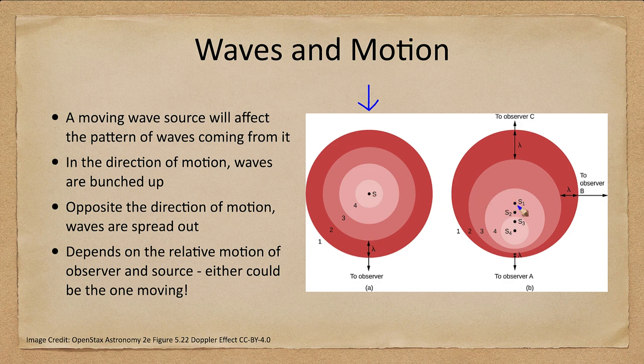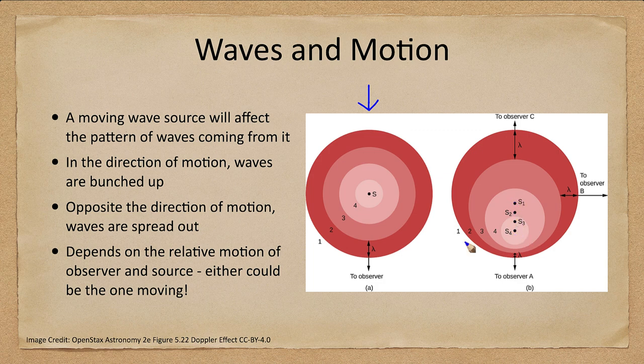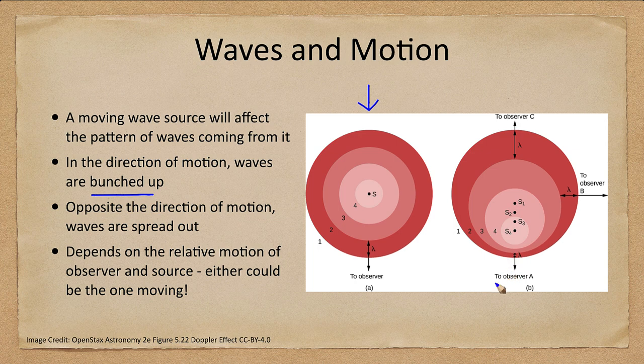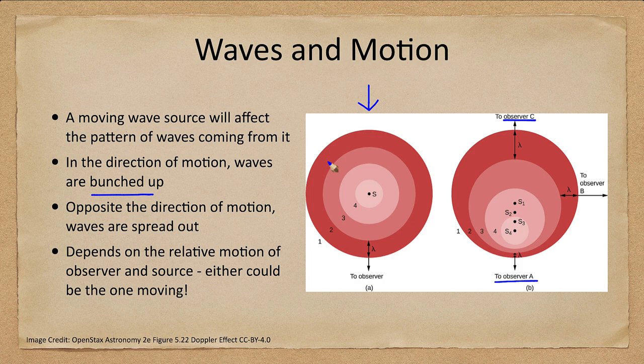However it's different if the observer is moving. They move from position one to two to three to four here, and that means that the waves will bunch up in the direction of motion. So an observer at position A will see the waves all bunched up. An observer at position C will see them all spread out, and that is all because the source is moving at the same time.